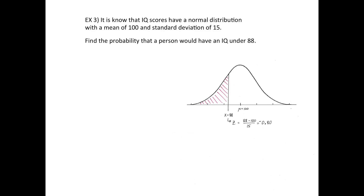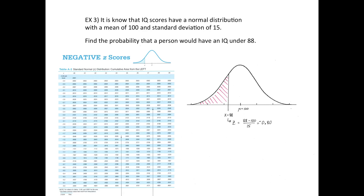Another example using the same IQ distribution: what's the probability that somebody has an IQ under 88? Draw the picture with the mean in the middle, then compute the z-score. Because 88 is to the left of the mean, the z-score is negative: z equals negative 0.80. Using the negative z-scores table in Table A2, look up negative 0.80, and the answer is 0.2119.